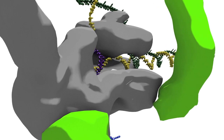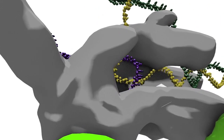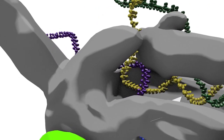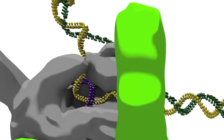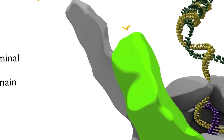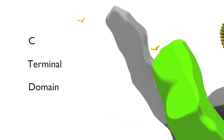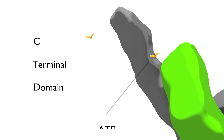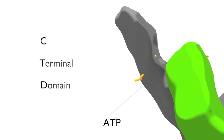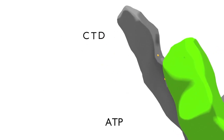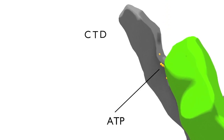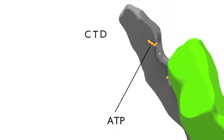RNA polymerase now forms a stable complex with the DNA and continues to synthesize the RNA. At the same time, TF2H phosphorylates the C-terminal domain of the large subunits of RNA polymerase II. This domain is called CTD, and this phosphorylation is key to the processing of the RNA to produce the mature transcript.